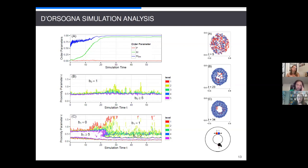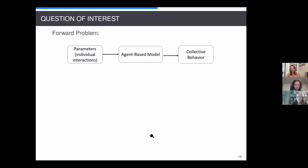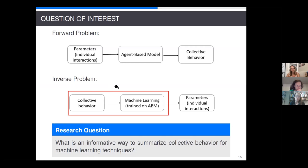So, how are we going to use this to do some parameter identification? So, this is our main goal. So, commonly there is a forward problem of we assign some parameters, feed them into some sort of agent-based model, and then we get out our collective behavior. But in this project, we're actually going to do more of an inverse problem. So, given some collective behavior, can we use some feature vector that we can feed into machine learning algorithms to infer individual parameters and also understand what types of behaviors we're seeing? So, our goal is to say, what is an informative way to summarize this collective behavior for these various machine learning techniques?